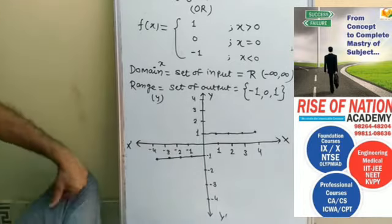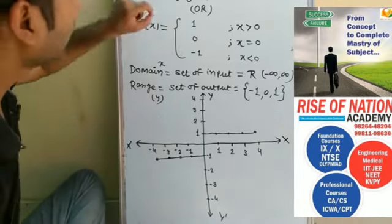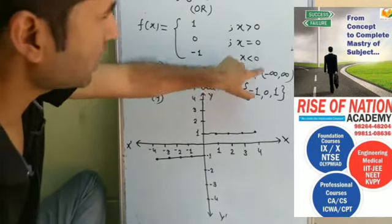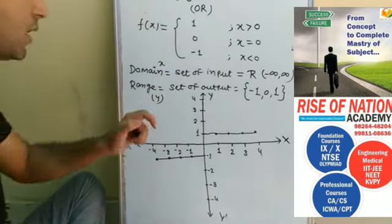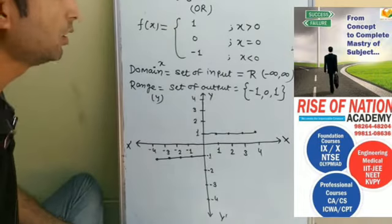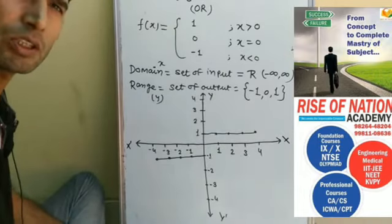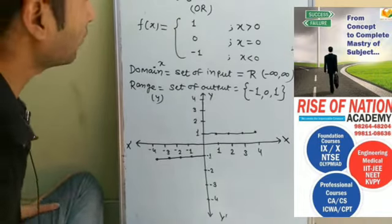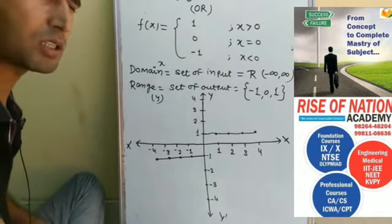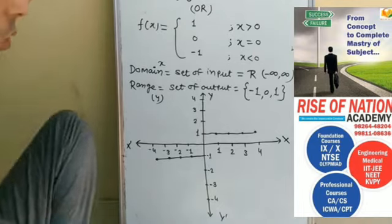So that is the graph of the signum function. The domain is the set of real numbers, and the range is the set of outputs: minus 1, 0, and 1. That is the overall summary of the signum function. Thank you for watching my video. Please share and comment. Thank you.